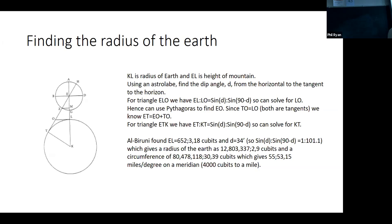so he figures out the radius of the earth to be around 13 million cubits and the circumference of the world to be around 80 and a half million cubits. And so that gives miles to degree of 55 miles, 53, 15 miles per degree on a meridian. Using the fact that it's 4000 cubits. And of course, this agrees very much with the survey of Al-Mamun that was done like 200 years earlier.